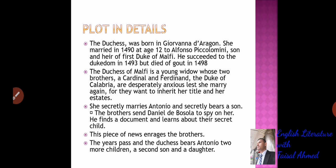The Duchess's two brothers, Cardinal and Ferdinand the Duke of Calabria, are desperately anxious lest she marry again, for they want to inherit her title and estates. She secretly marries Antonio and secretly bears a son. The brothers send Daniel de Bosola to spy on her. He finds a document and learns about the secret child. This news enrages the brothers. The years pass and the Duchess bears Antonio two more children — a second son and a daughter.